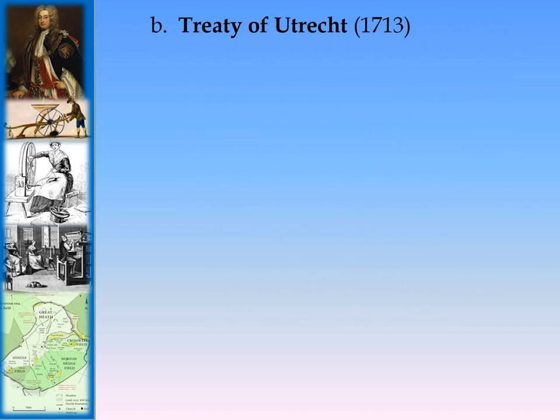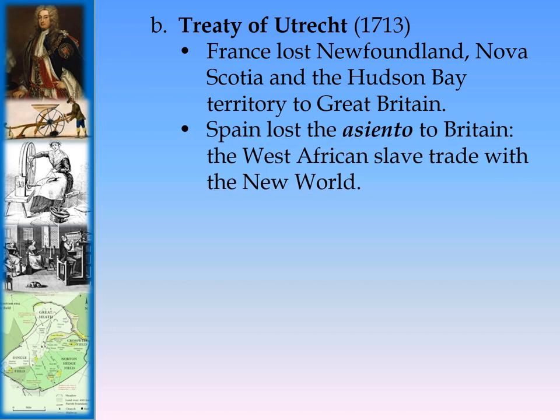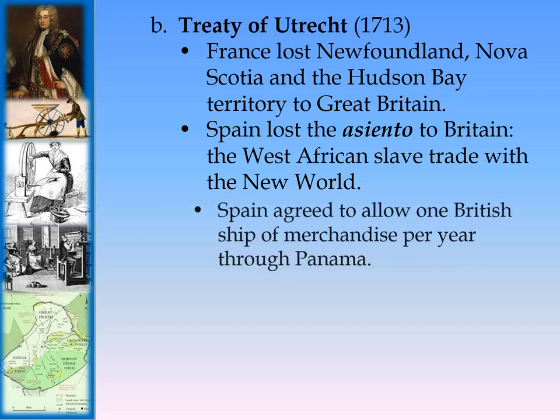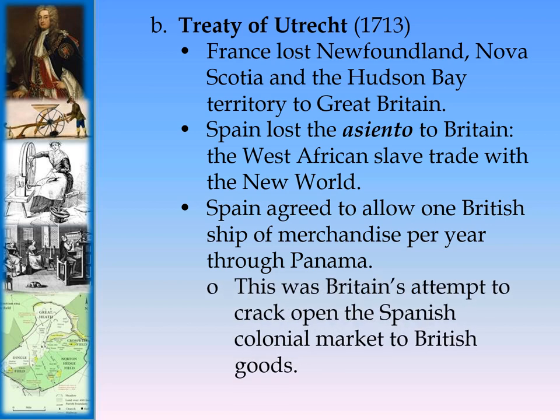The Treaty of Utrecht in 1713 ended the War of Spanish Succession. France lost Newfoundland, Nova Scotia, and the Hudson Bay territory in North America to Great Britain. Spain lost the Asiento — the West African slave trade monopoly with the New World — to Britain. Spain also agreed to allow one British ship of merchandise per year through Panama, representing Britain's attempt to crack open the Spanish colonial market.